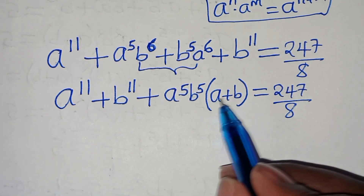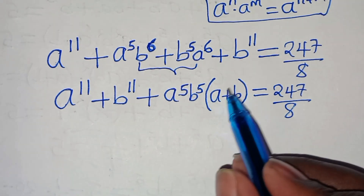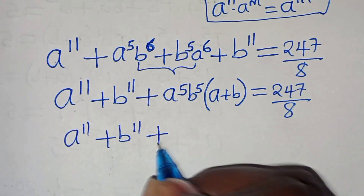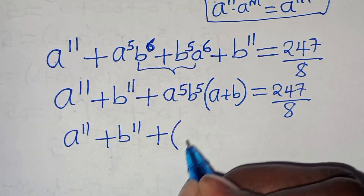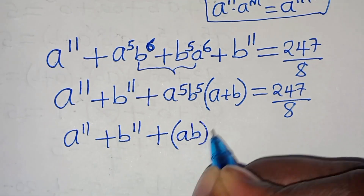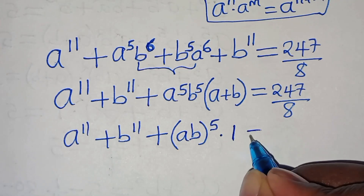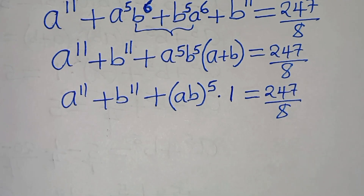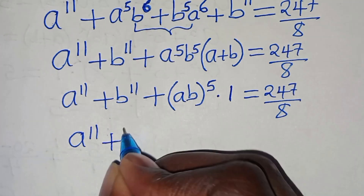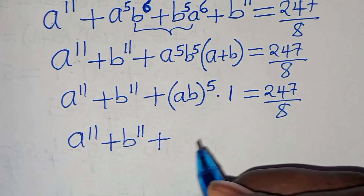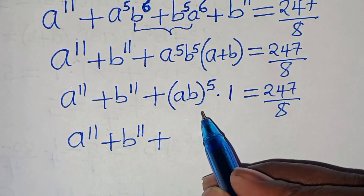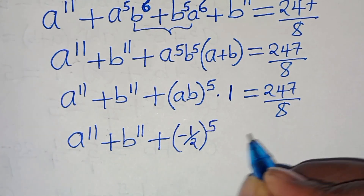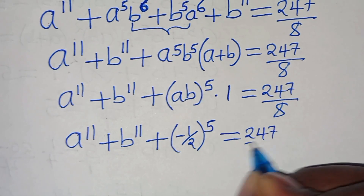From equation one, a plus b equals one, so we can substitute one here. So a to the eleventh plus b to the eleventh, plus ab raised to the power of five — where ab is minus one half from equation three — times one, equals two hundred forty-seven over eight. Now minus one half to the power of five is minus one over thirty-two. So a to the eleventh plus b to the eleventh minus one over thirty-two equals two hundred forty-seven over eight.